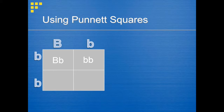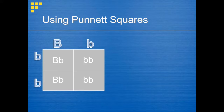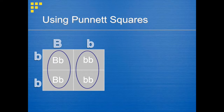Take a few minutes to fill in the other two boxes. The four genotypes from the Punnett square are the possible genotypes for offspring of these two parents. There are only two different genotypes the offspring could have: capital B, lowercase b, or lowercase b, lowercase b. The child has a 50% chance of having the genotype capital B, lowercase b, and a 50% chance of having the genotype lowercase b, lowercase b.